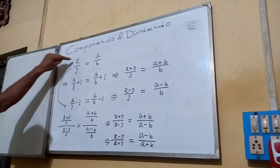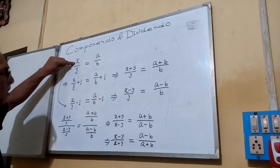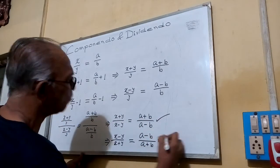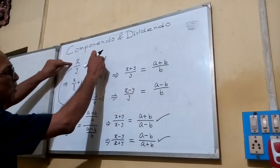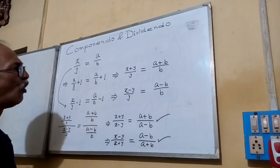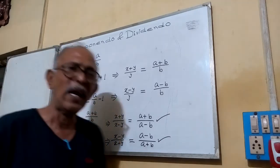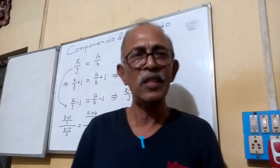So, from here, if this relationship is given, we can write either of these. Whenever this relationship is correct, these relationships are also correct. This is known as Componendo and Dividendo. Thank you.